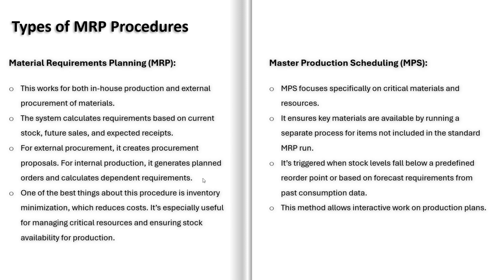Next, we have Master Production Scheduling, MPS. This method focuses on critical resources, such as high-demand finished products or key components. Unlike standard MRP, MPS runs separately for critical items to ensure they are always available. If stock drops below a certain level, the system generates production plans to maintain a steady supply.